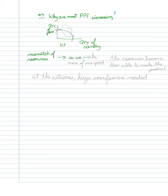Basically, as we make more of one good, the resources become less able to make the product.